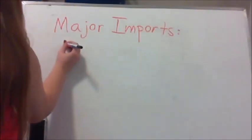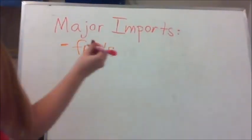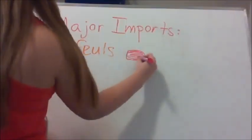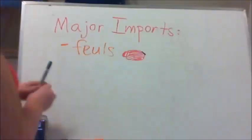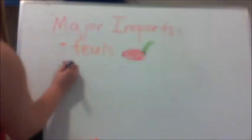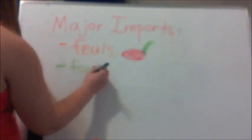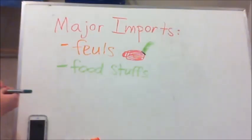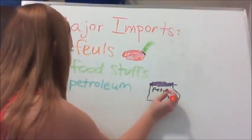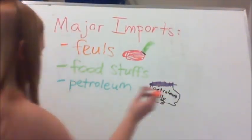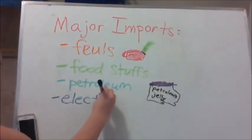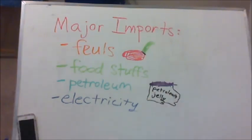Now let's talk about some major imports, which include fuels — that's my poor drawing of a gas can — and foodstuffs, I'm not sure what that means but let's just go with it. Also petroleum — I tried to draw a container of petroleum jelly because that's just what I thought of — and electricity.